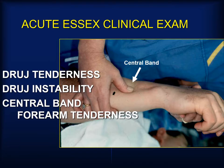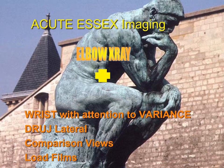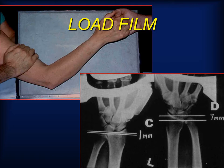In the setting of a radial head fracture or other elbow injury, a clinical examination should note any tenderness or instability at the distal radial ulnar joint. The mid-forearm directly over the central band should be palpated and any tenderness noted. Aside from the elbow x-ray, plain imaging of the wrist with attention to ulnar variants is helpful, as is a distal radial ulnar joint lateral. Comparison views of the opposite wrist may shed further light and load films can be helpful. Load films are done by having the injured patient grasp the examiner's hand or a JMI dynamometer while x-raying for shift or change in distal radial ulnar joint variants.